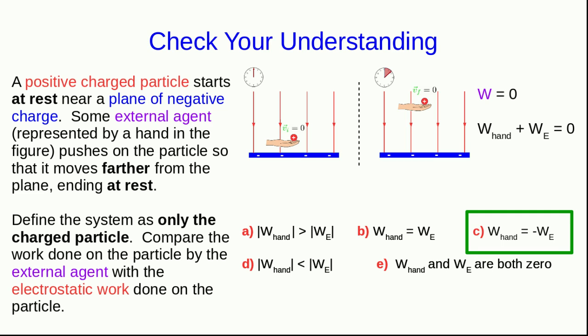Notice that we can understand this in terms of the forces. The electric force on the particle is down. The force that the hand must be exerting on the particle to move it up against that electrical force is up, and there is a force displacement vector here pointing up. The point of application of both of these forces is at the particle, and so the work that the hand does is in the same direction as the force displacement vector, so that's positive work, and the force by the electric field is in the opposite direction, so it's doing negative work.